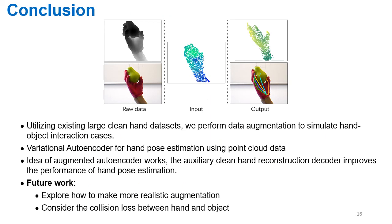In conclusion, utilizing existing large clean hand datasets, we perform data augmentation to simulate hand-object interaction cases. We propose to use a variational autoencoder for hand pose estimation using point cloud data, and the idea of the augmented autoencoder works, where the auxiliary clean hand reconstruction decoder improves the performance of hand pose estimation. In future work, we will explore how to make more realistic augmentation with objects, and also consider the collision loss between the hand and object.